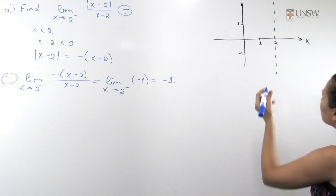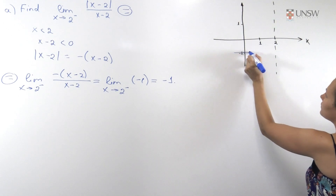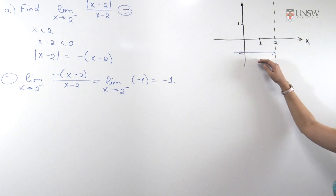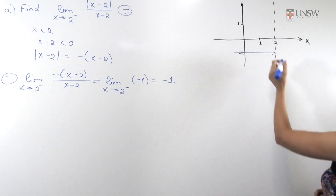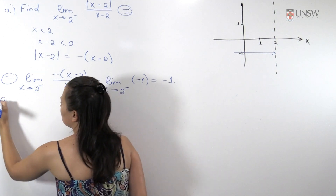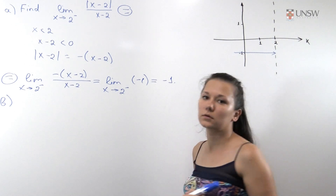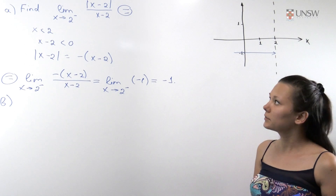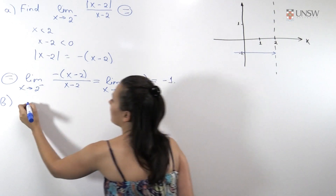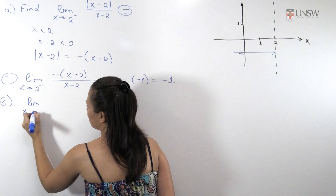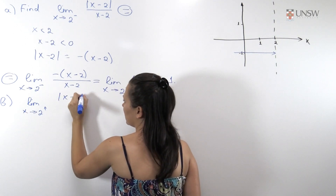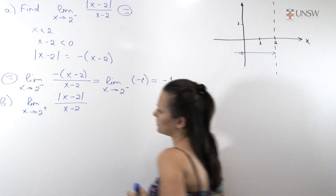On the graph we will be writing something like this — our function has the value minus 1 from the left as it goes to 2. In part b, we will now be looking at the one-sided limit, but now the right-hand limit. So we need to find the limit as x goes to 2 from the right of the absolute value of x-2 over x-2.